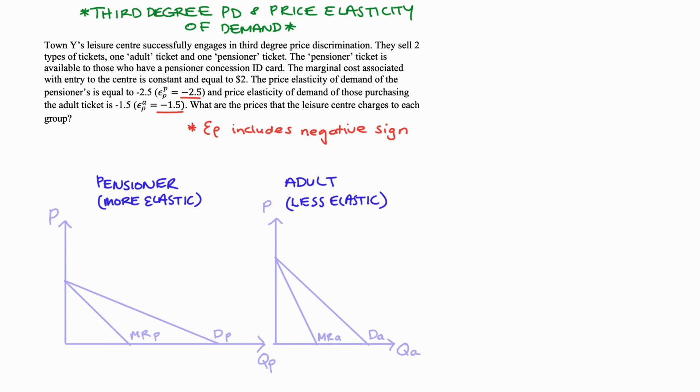So perhaps if we drew out the demand curves associated with each type of consumer, they would perhaps look something like this. The pensioners demand will be more elastic, so it's flatter compared to the adults demand curve. It's steeper. It's more inelastic.